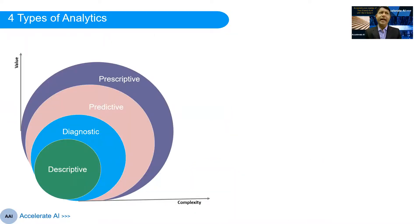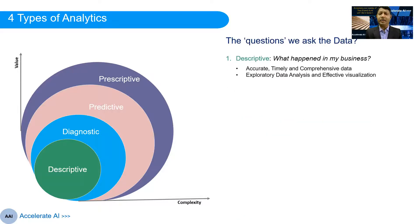In the literature, analytics is divided into four different types, and the boundaries can be confusing. The way I understand this is in terms of the type of question we are asking the data. If we ask 'what happened in my business?' — focusing on the past, looking at last week, last month, last quarter — for example, looking at overall sales by different product lines and regions, that type of analytics is called descriptive analytics.